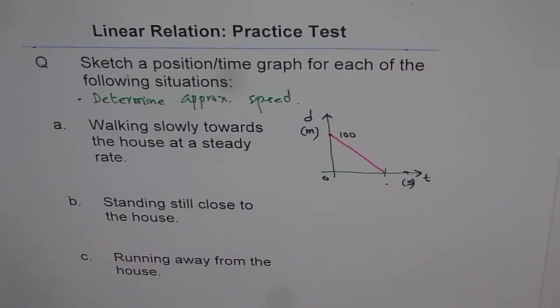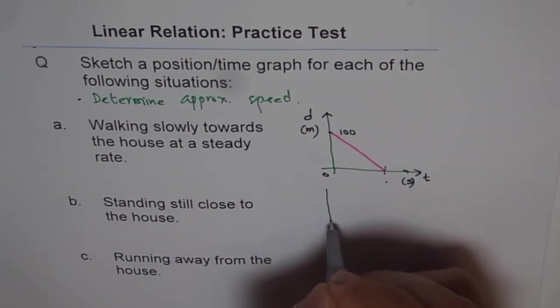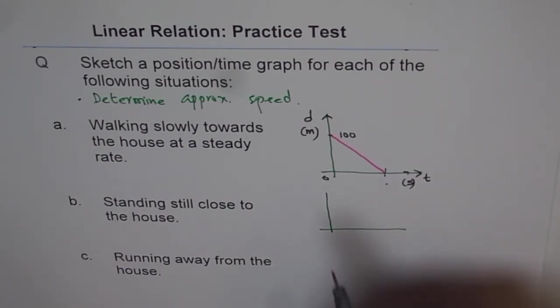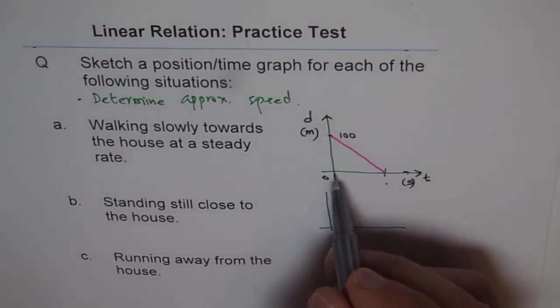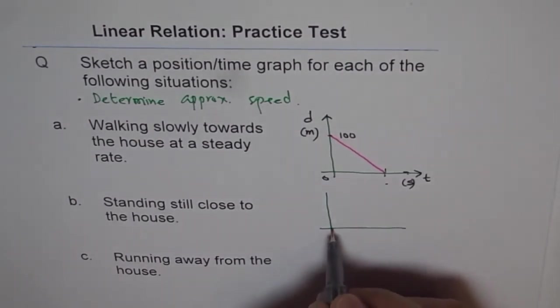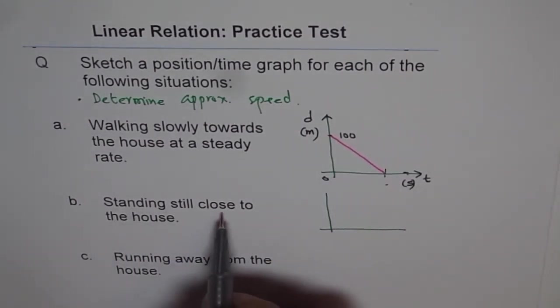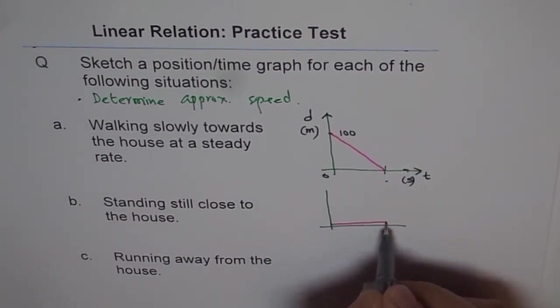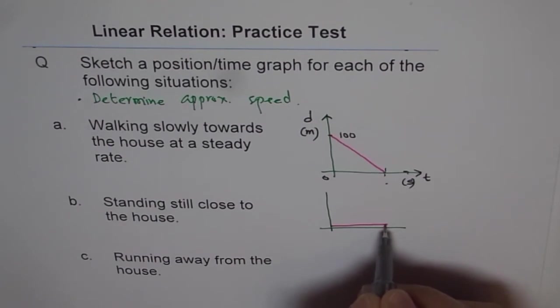Now, the second question is standing still close to the house. What does that mean? That will mean you are not that far away but very close. You could draw a line. Standing still means distance maintained at the same position. That means a line very close to the x-axis. Do you see that?